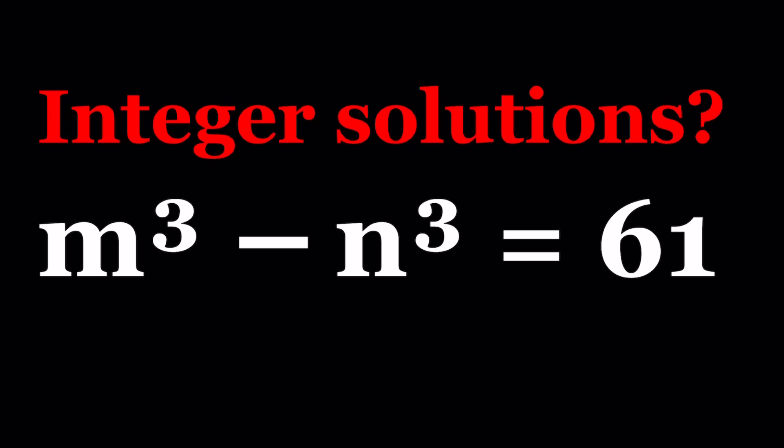Diophantine equations are basically equations with integer solutions most of the time. Sometimes there are rational solutions, and they may have infinitely many solutions, they may have no solutions, or they might have a finite number. One of the tools that we use is called modular arithmetic. Another one is factoring, which is something we're going to use. I also made a video about modular arithmetic you can check out.